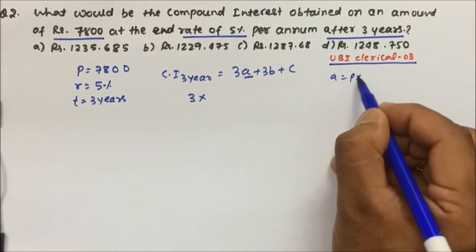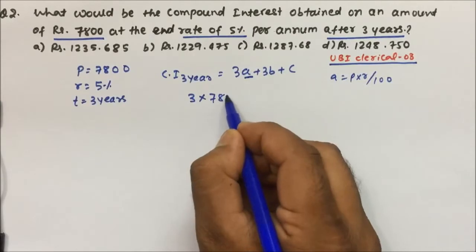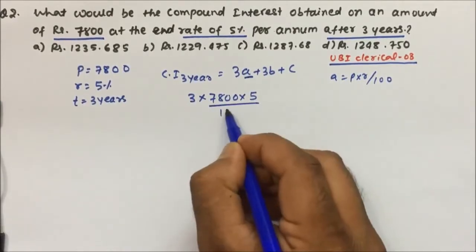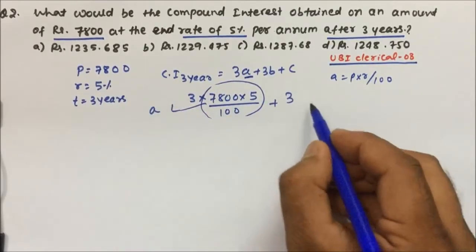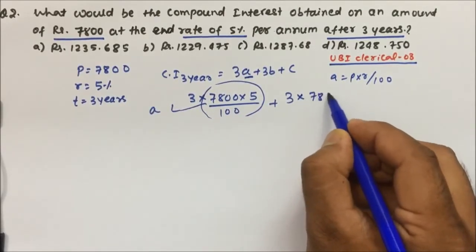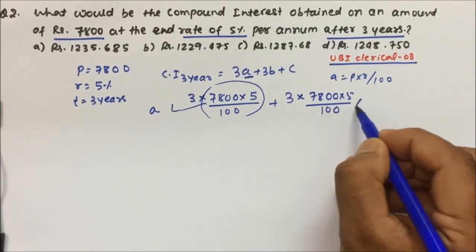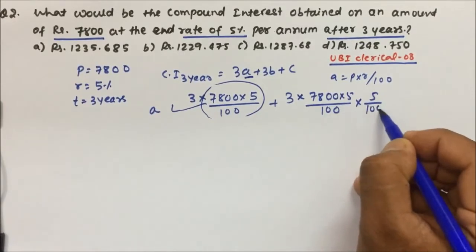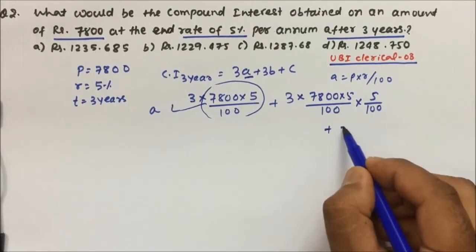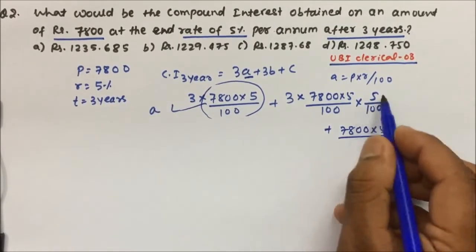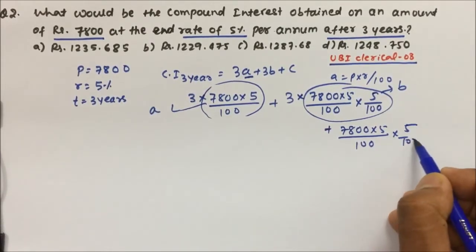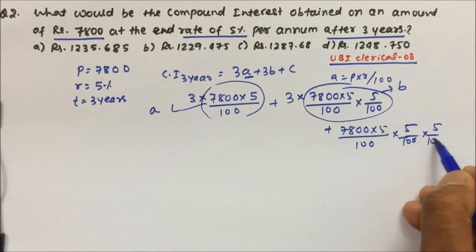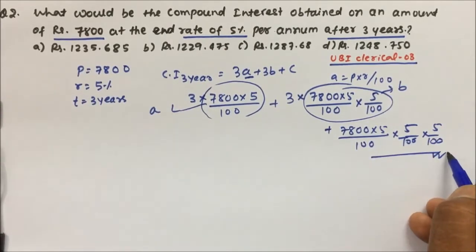a is equal to P into r by 100, so P is 7800 into r which is 5, divided by 100. For 3b, this complete expression becomes a for us: 3 into 7800 into 5 divided by 100 into 5 by 100. For c, c is b into r by 100, which is the total b value into 5 by 100 into 5 by 100. This will again give a very small value so c can be ignored, but let's solve it.